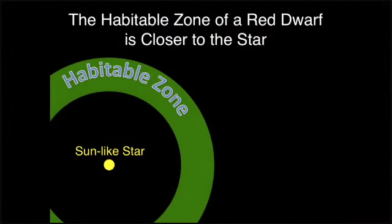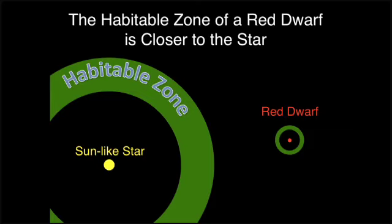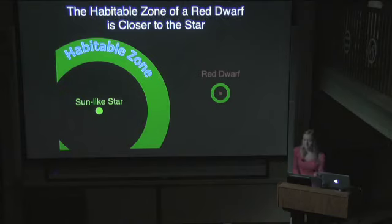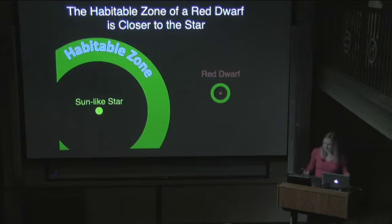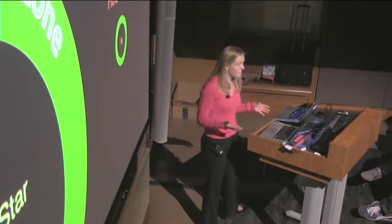Another reason I like to look for planets around these red dwarfs is that their habitable zones are much closer in. This shows to scale the habitable zone of a Sun-like star. If we throw up a red dwarf, you can see the habitable zone is much, much closer in. A planet in the habitable zone of a star like the Sun would have a year of 365 days, but a planet in the habitable zone of a red dwarf might have a year that lasts only one month. That means if you're trying to find a planet around that star, you have 12 times as many opportunities to see the planet go around — as someone trying to finish graduate school in a short amount of time, that's very, very helpful.